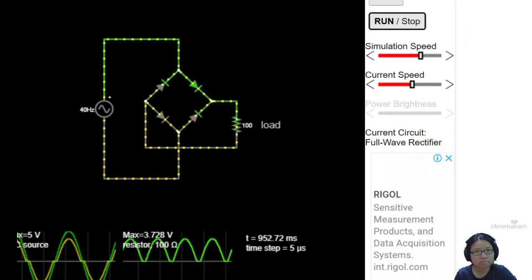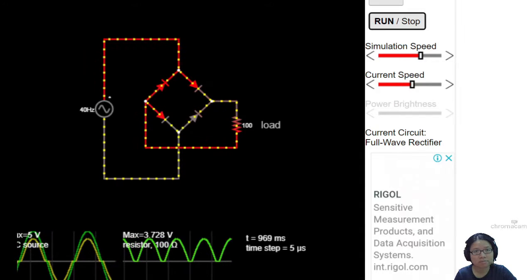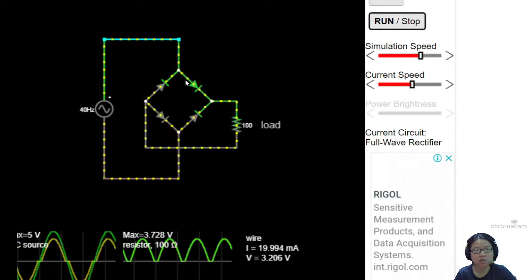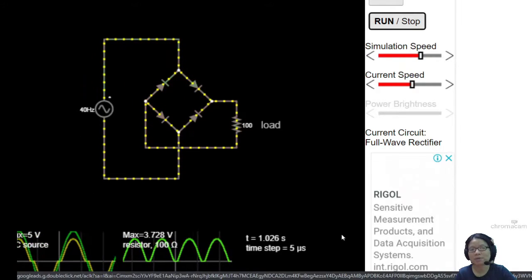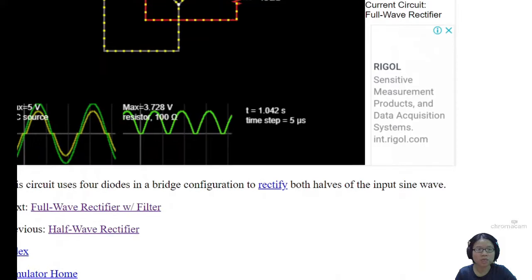So yes, at certain cycles the current, this one will conduct and then go back this way. Certain cycles it will conduct and go back the other way.